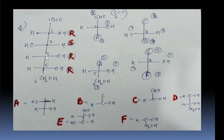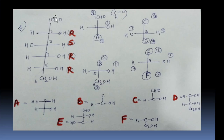Now for the 4th chiral carbon: OH is number 1 and H is number 4. The groups below are considered E and F. Same problem: H and OH on both sides. We look at the next carbon: one side has OH, CHO, and H; the other has CH2OH — meaning two hydrogens and one oxygen versus one oxygen, one hydrogen, and one carbon. The group with one carbon gets priority, so it is number 2 and the other is number 3. Going 1, 2, 3 we get S, but the lowest priority is on the horizontal, so the answer is R.